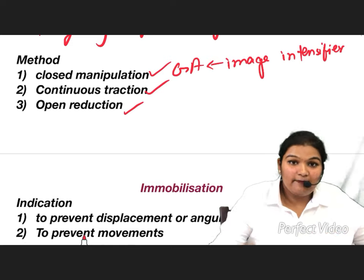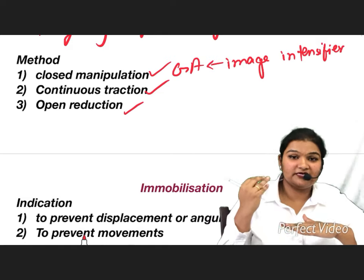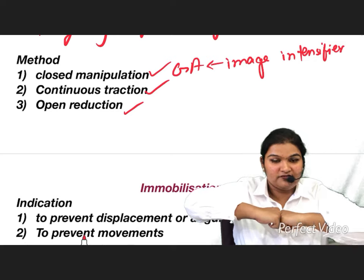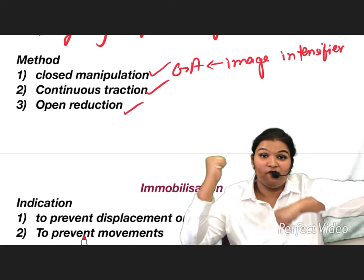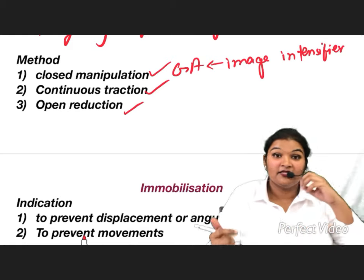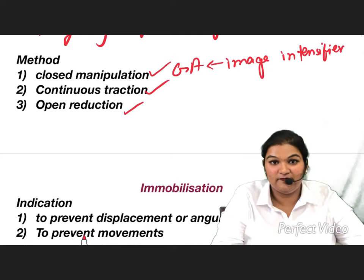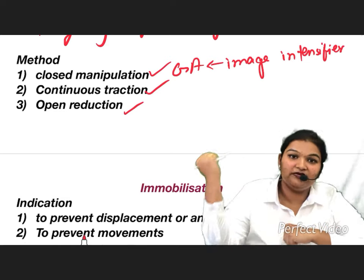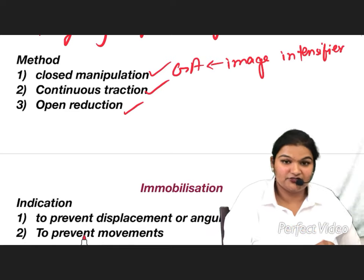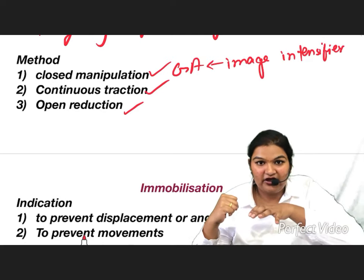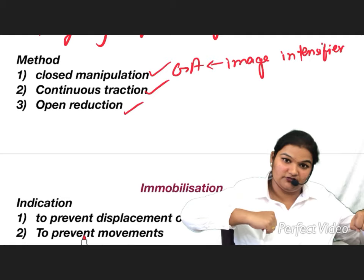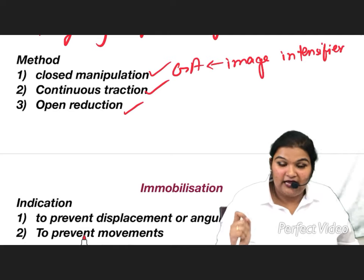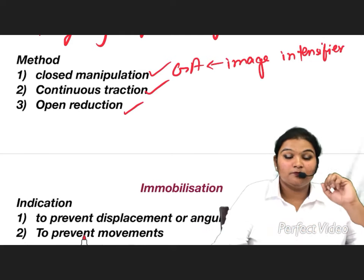The second method is continuous traction. In some bones, powerful muscles are inserted near the fracture site. When you reduce the fracture ends, the powerful muscle pull displaces them again. For example, in fracture of the shaft of the femur, the hamstrings are powerful and will repeatedly displace the reduced ends. Traction applies a continuous pull opposite to the muscle, nullifying its effect and keeping the bone ends in contact.